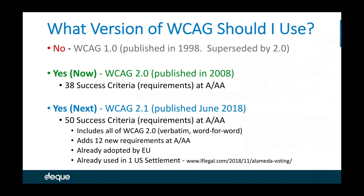WCAG 2.0, published in 2008, is a very valid standard with 38 requirements at the AA level — you can use it now and going forward. WCAG 2.1, published in June of this year, has a total of 50 success criteria at A and AA. It includes every single piece of WCAG 2.0 verbatim — it did not throw 2.0 out — and adds 12 new requirements at the A and AA level.